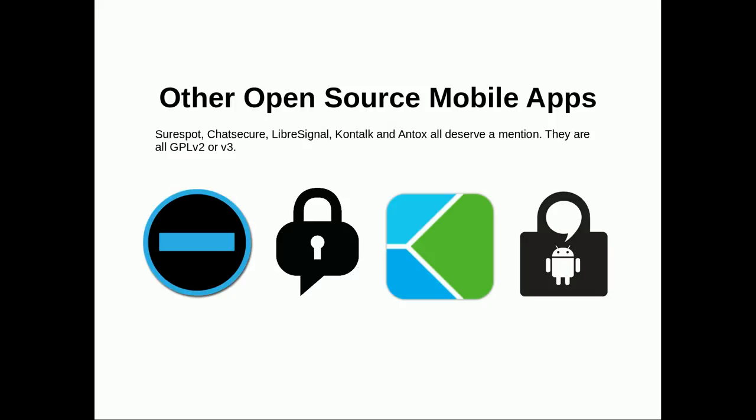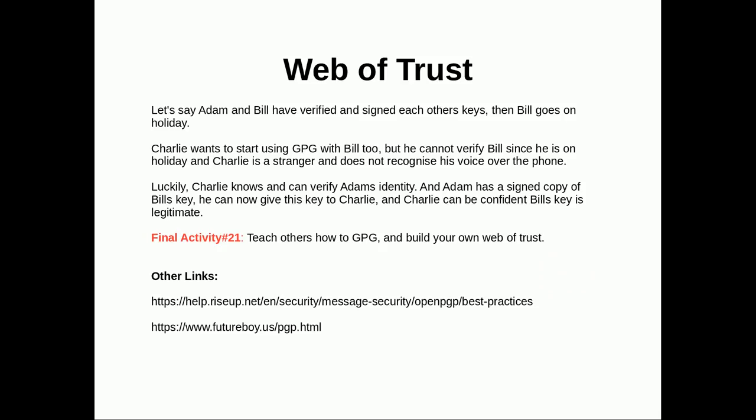Other open source mobile apps worth mentioning include: SureSpot, ChatSecure, LibreSignal, Kontalk, and Conversations — they're all GPL version 2 or 3. If you want to try the other private messaging apps out there, there's quite an ecosystem of them forming.